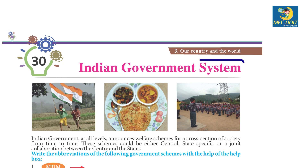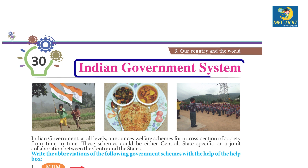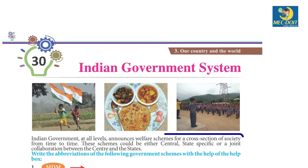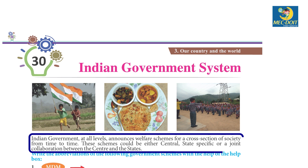Chapter 30: Indian Government System. Indian Government, at all levels, announces welfare schemes for a cross-section of society from time to time. These schemes could be either central, state-specific, or a joint collaboration between the centre and states.